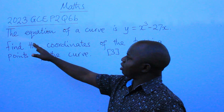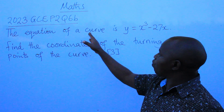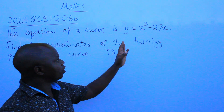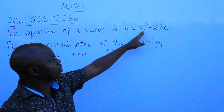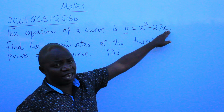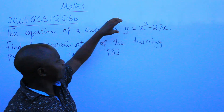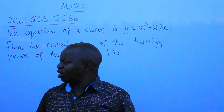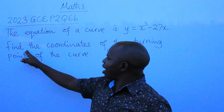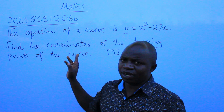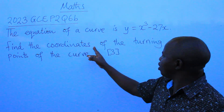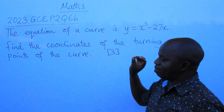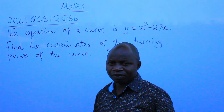The question says the equation of a curve is y equals x to the power 3 minus 27x. The question is: find the coordinates of the turning points of the curve. Three marks.